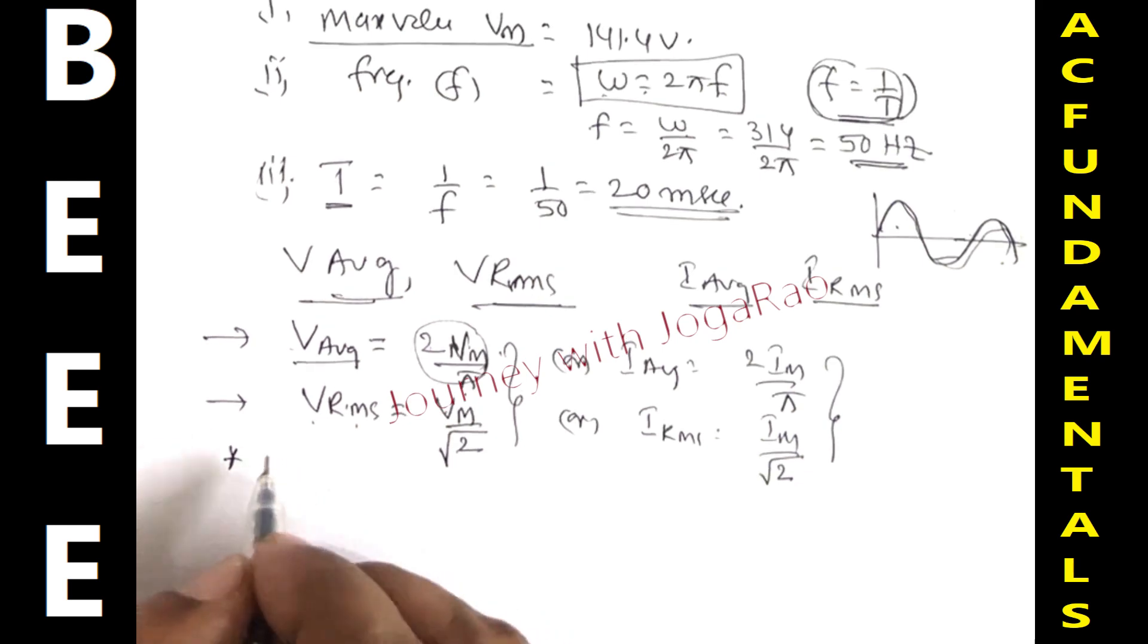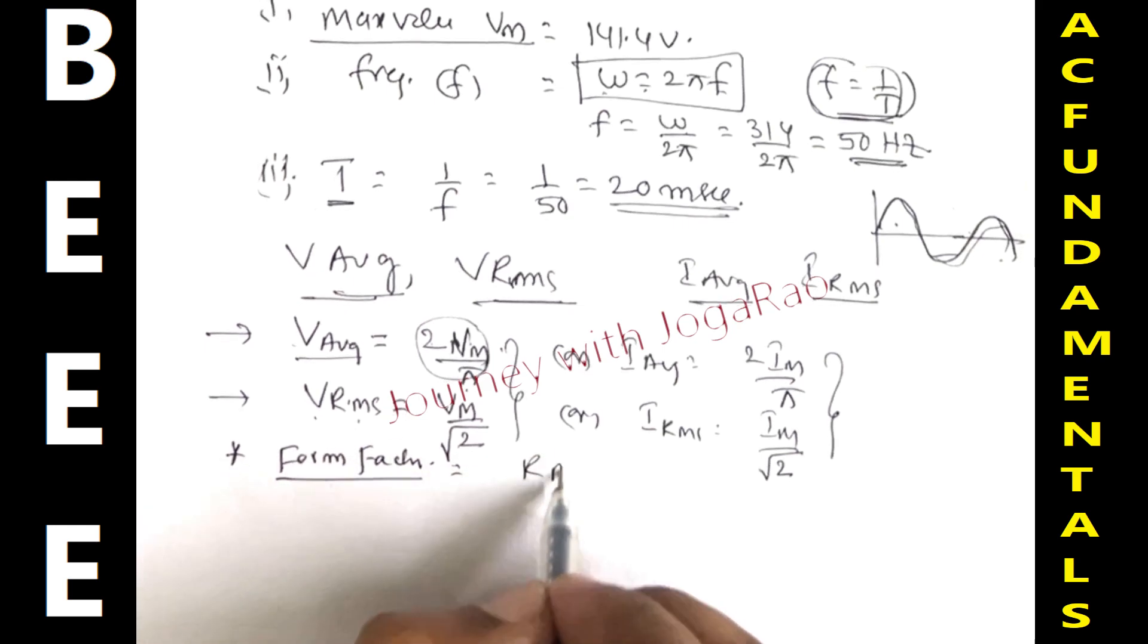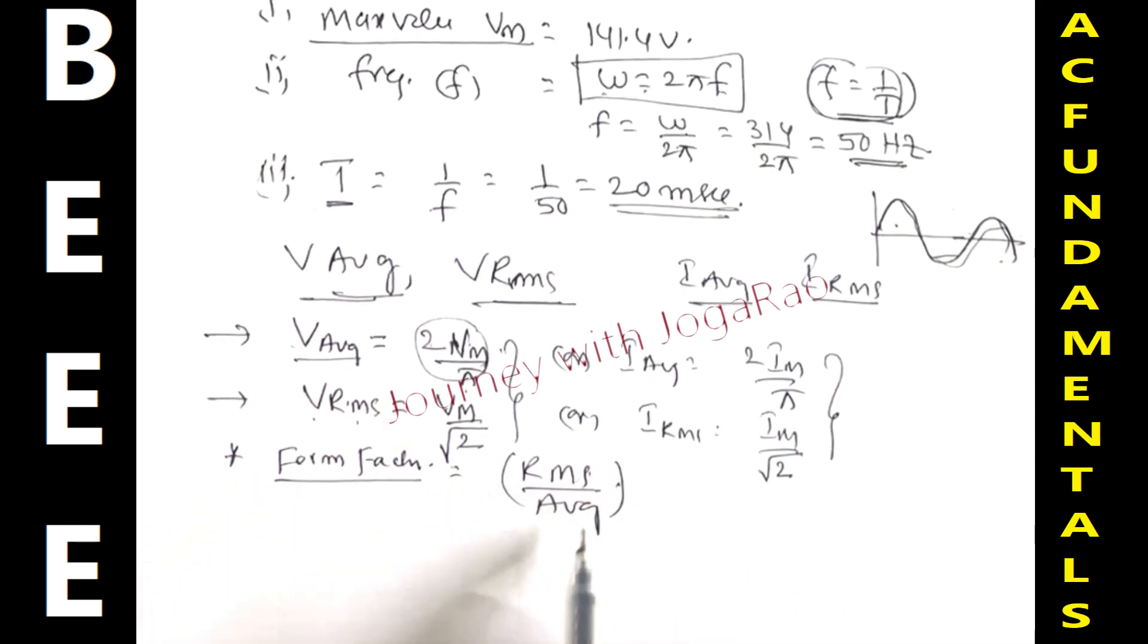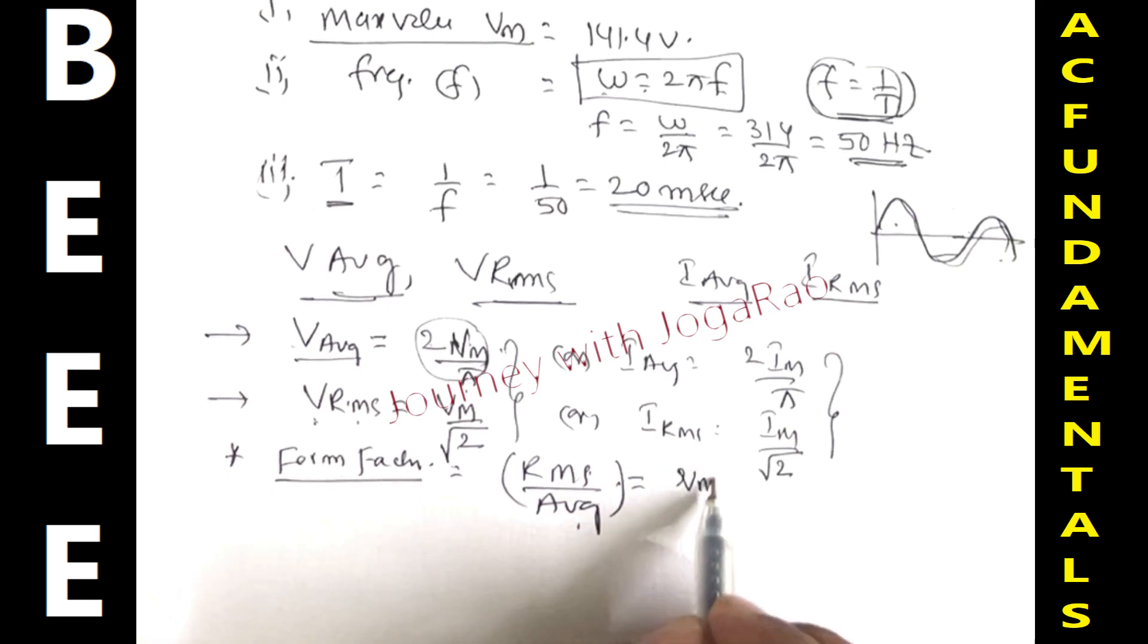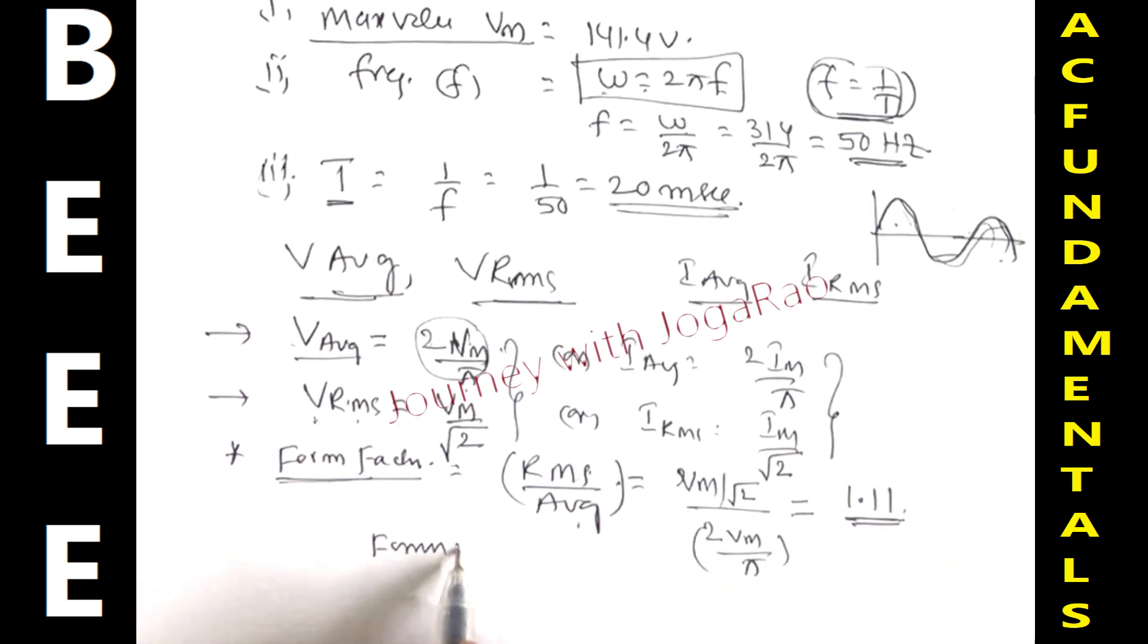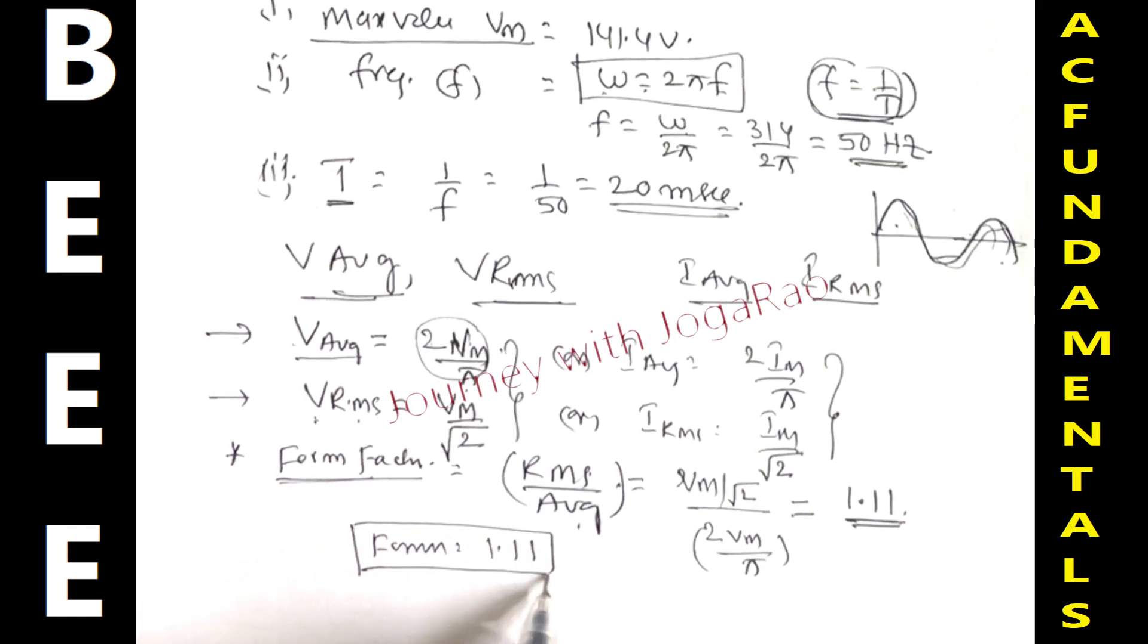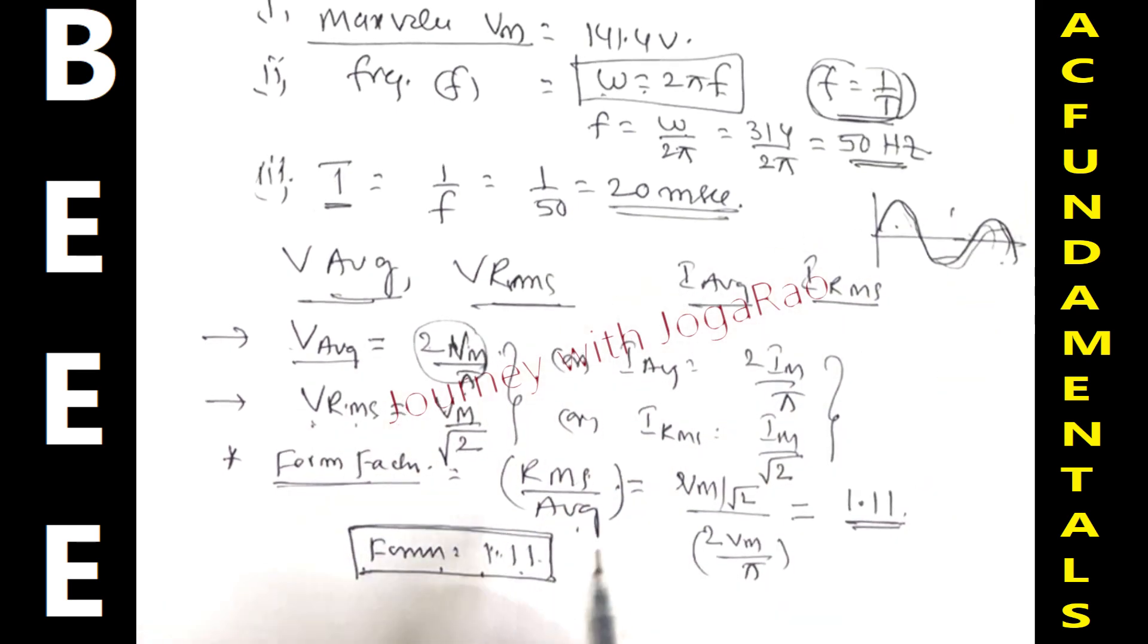The important definition is form factor. Form factor is equal to RMS value by average value. For any waveform, RMS value is Vm by root 2, average value is 2 Vm by pi. If you calculate this, you get 1.11. The pure sinusoidal waveform form factor is 1.11. This may appear in objective type questions.